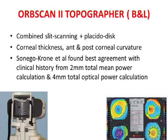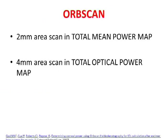A commonly available instrument is the OPD-Scan 2 topographer. In that device, the normal display map is not what you should primarily use. According to studies, you should look at the total mean power map or total optical power. You will need to go into your settings, access that map, and look at the power at the 2 mm or 4 mm zone — which is easy in the OPD-Scan: just move your cursor to the desired point and read the display value.